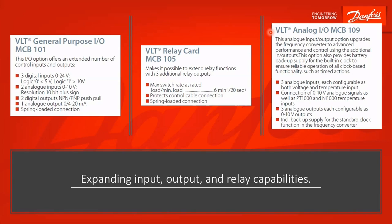The analog input-output, MCB109, gives you an additional three analog 0 to 10 volt inputs that can be configured to take temperature sensors. It gives you three additional analog outputs, and it includes the backup battery supply for the real time clock. Without this, if you set a time and date into the drive, every time you cycle power it will revert back to its default settings. So if you want to use the real time clock, get the VLT analog input-output MCB109 option.